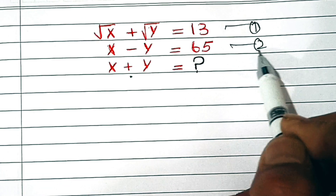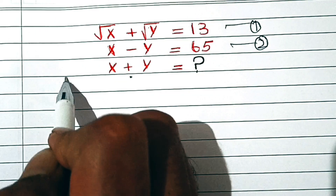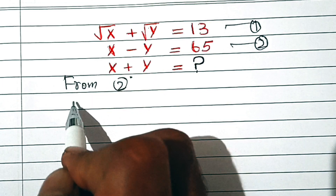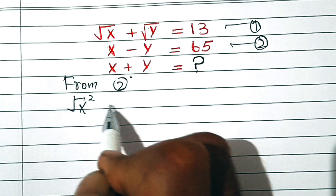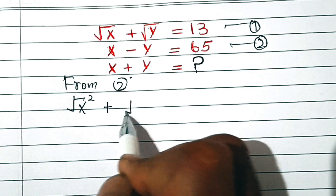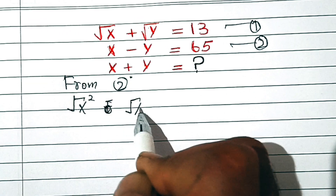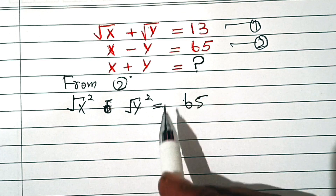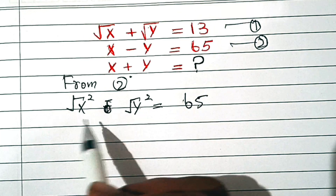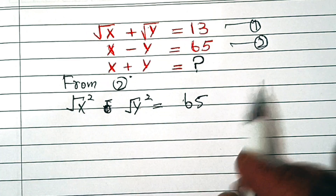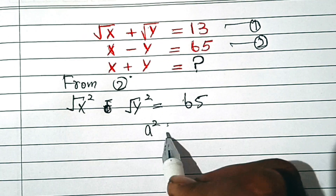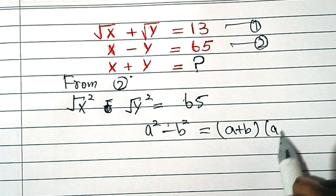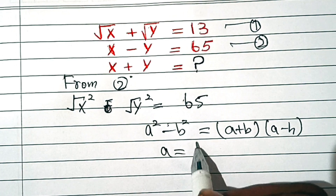This is Equation 2. From Equation 2, x − y can also be written as (√x)² − (√y)² = 65. As you can see, this is a difference of squares, which uses the formula a² − b² = (a + b)(a − b), where here a = √x.